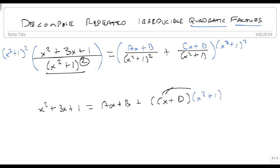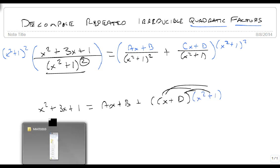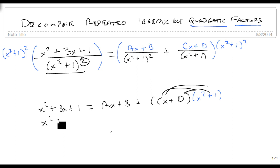We're going to have to FOIL this out, so we still get x squared plus 3x plus 1, and the Ax plus B doesn't change, but now we're going to get Cx cubed plus Cx plus Dx squared plus D.